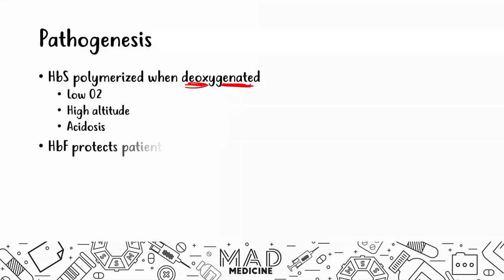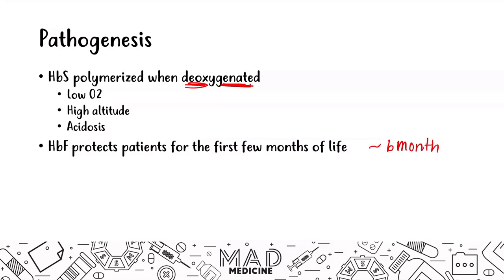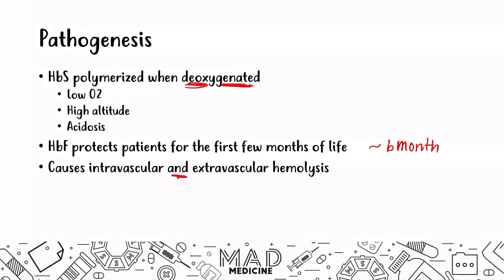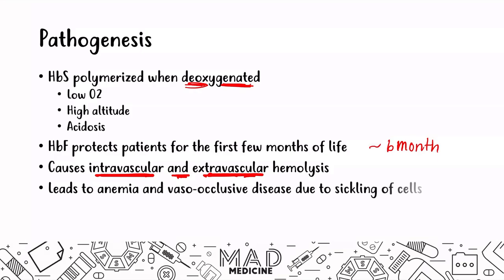Hemoglobin F is usually protective for the first few months of life, but after about six months you'll see a decrease in hemoglobin F and patients will present with classic signs of sickle cell disease. This causes both intravascular and extravascular hemolysis, and can lead to anemia and vaso-occlusive disease — all because of the sickling of the cell.